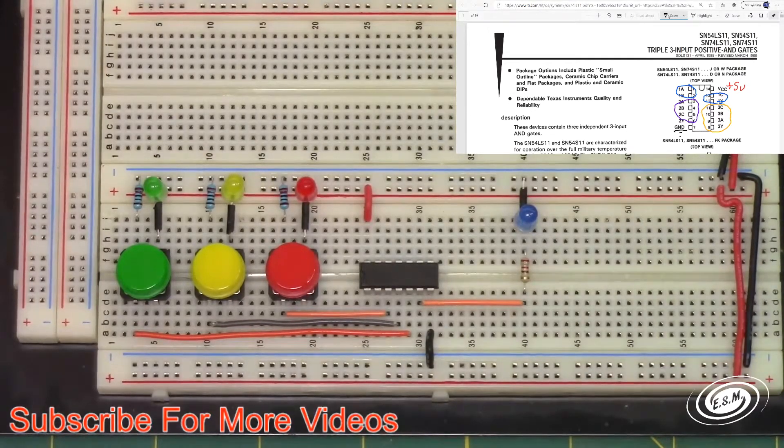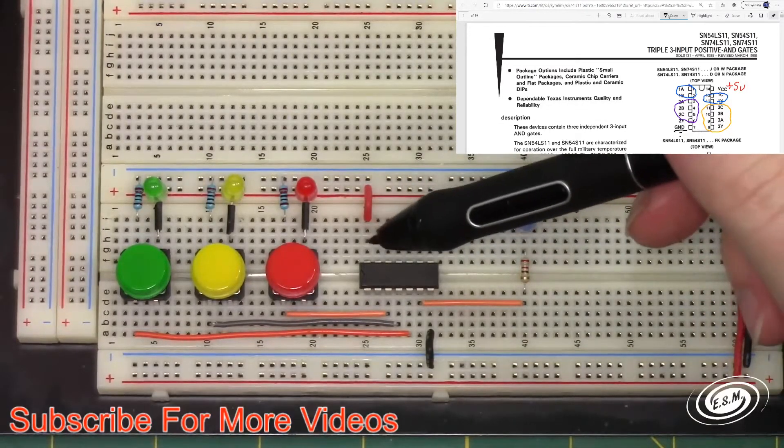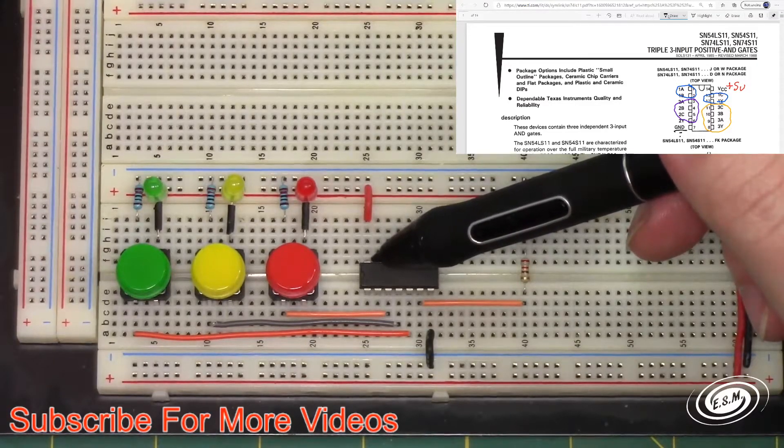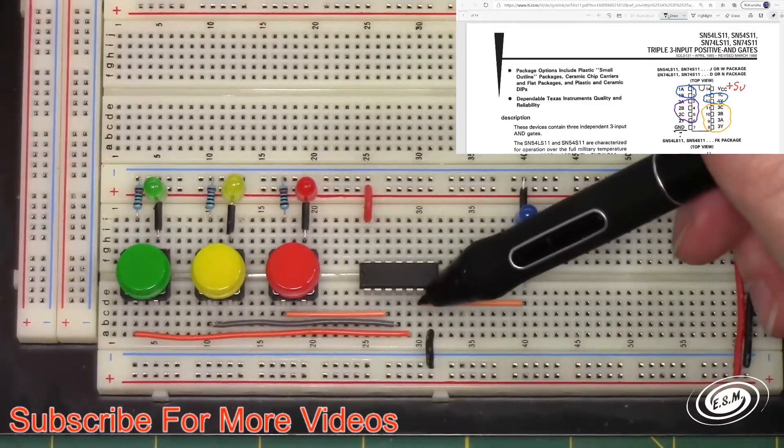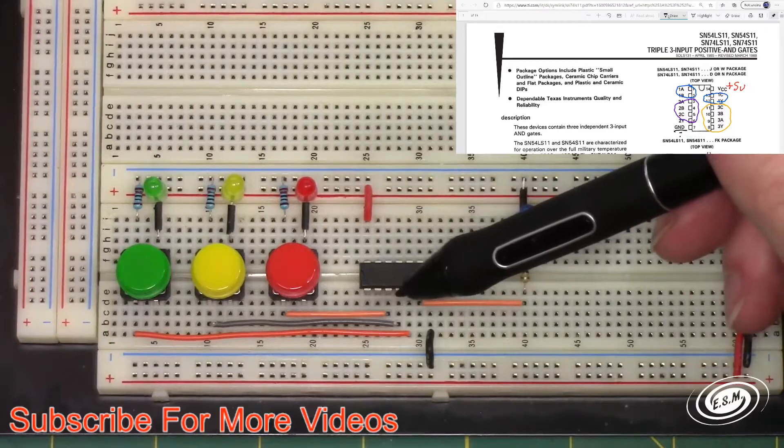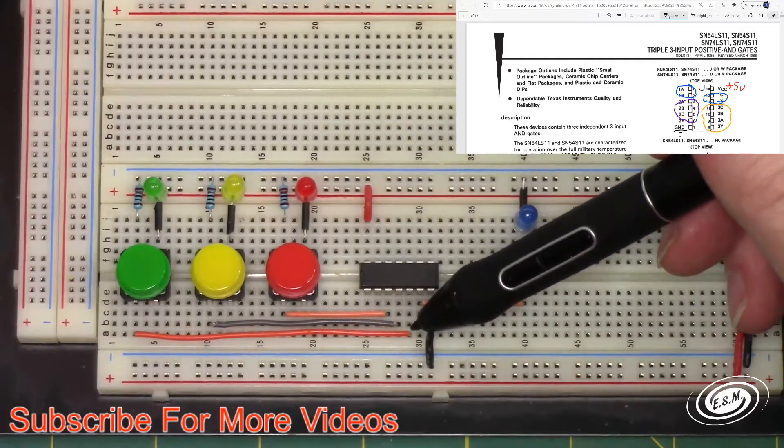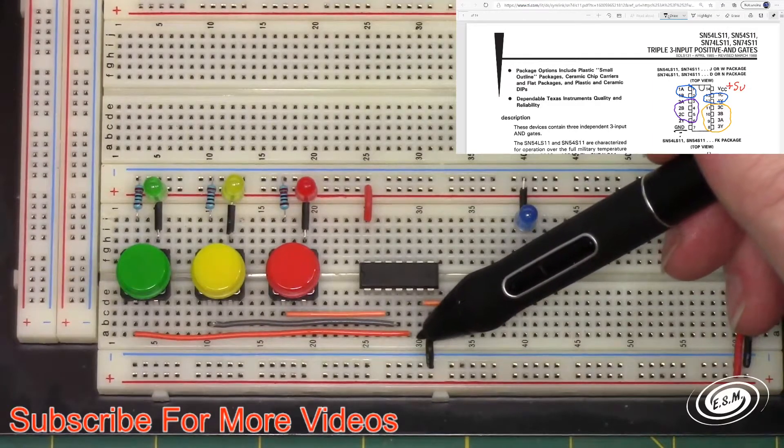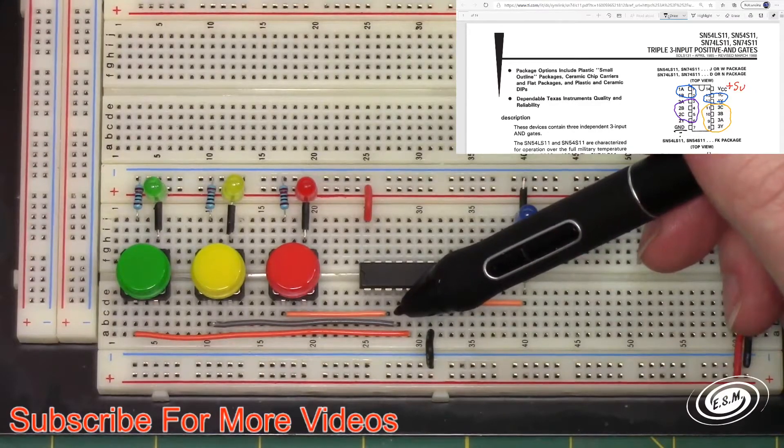I'll leave the data sheet up there so you can take a look at that. Let's take a look at what we have here. We have VCC into pin 14, we have pin 7 is ground, coming off of pin 6 we're going to our output, and our A is going to pin 3, B is going to pin 4.